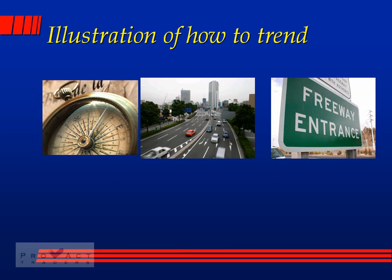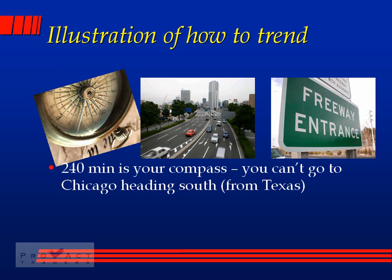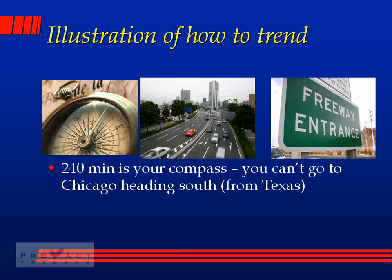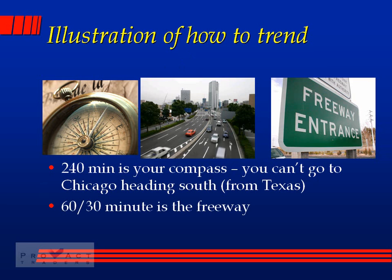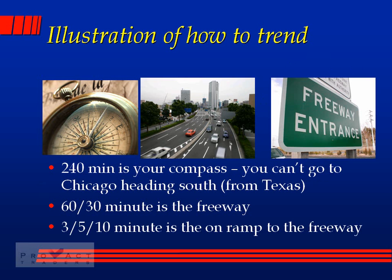Here's an analogy: the 240-minute is your compass. I live in Texas — if I want to go to Chicago, Chicago is north of me. But driving directly north from Austin I'll hit Fargo, North Dakota. I need more than just a direction — I need a freeway to Chicago. That's the 60-minute or 30-minute chart. Once the 60 or 30 minute chart confirms I'm going in the direction of the compass, I just need an entry on the 3, 5, or 10-minute chart.